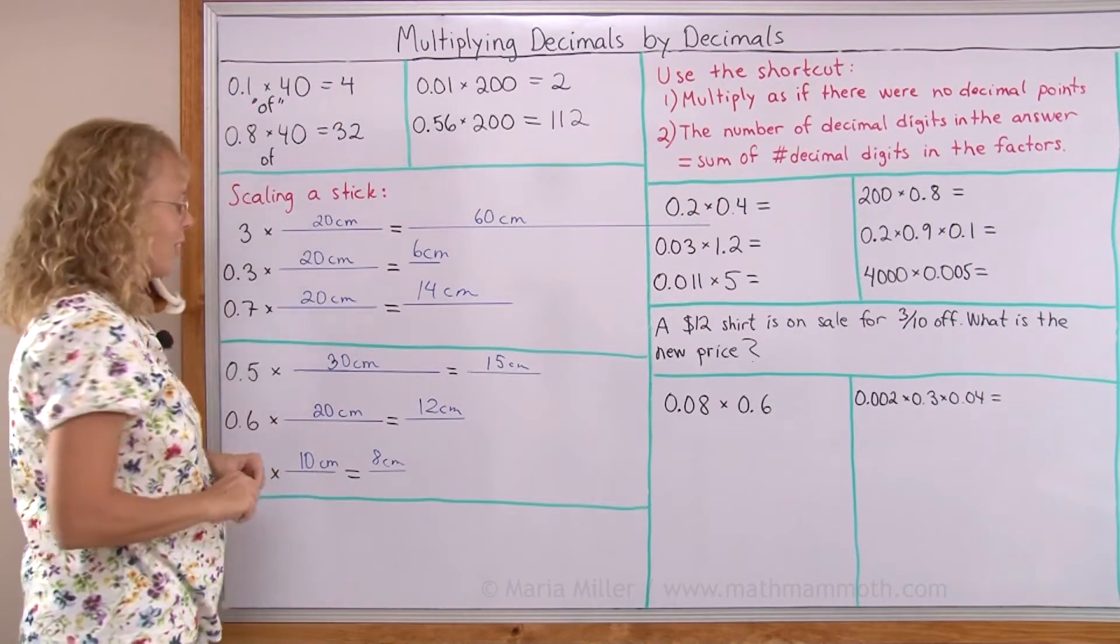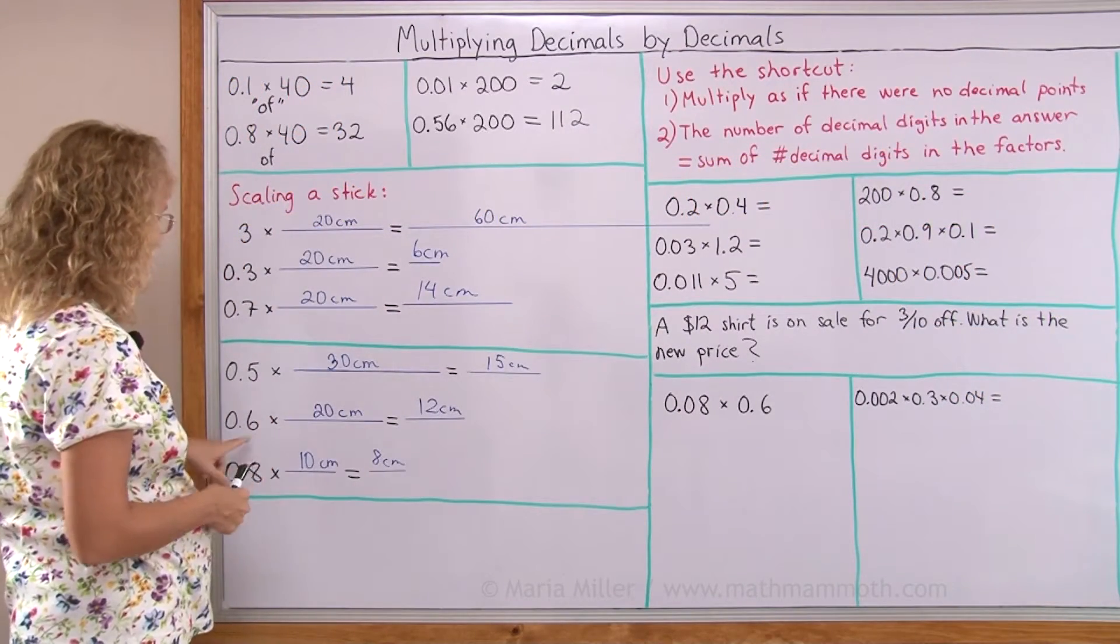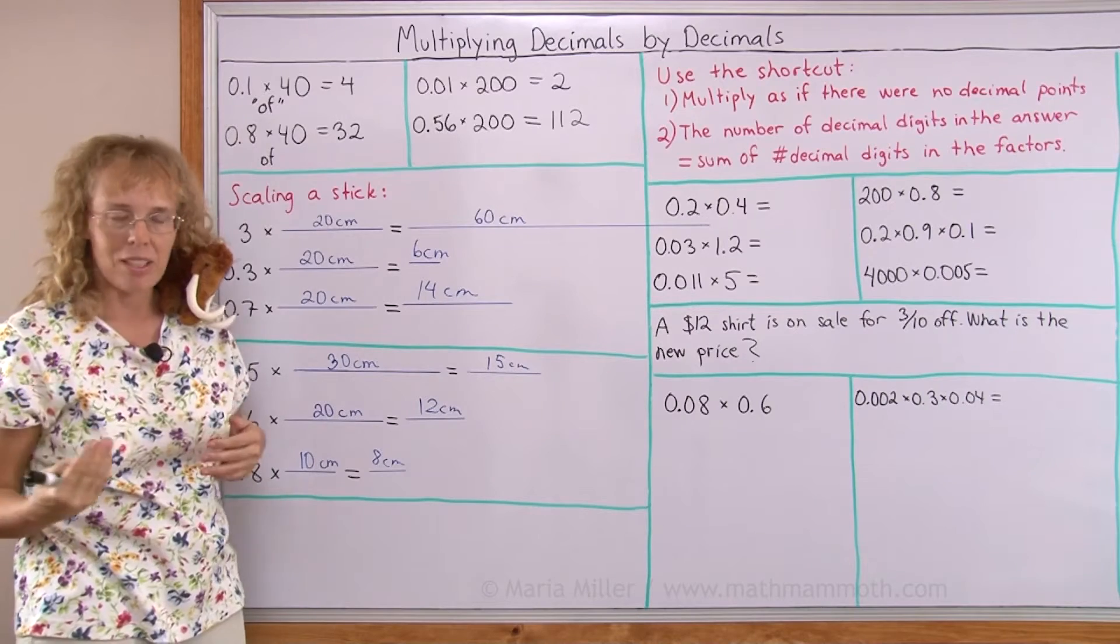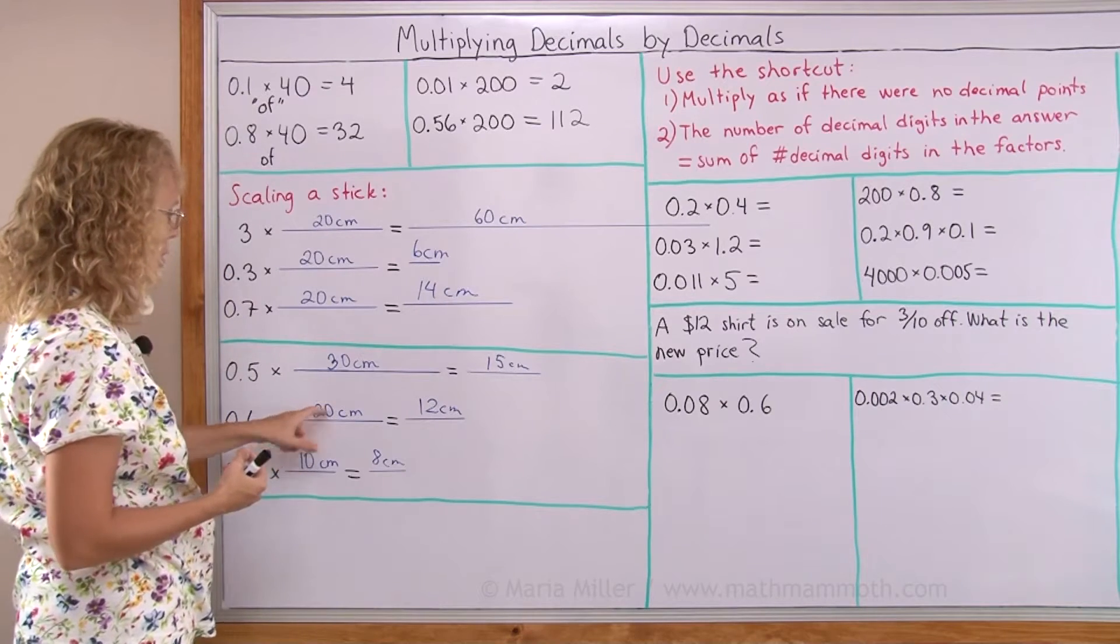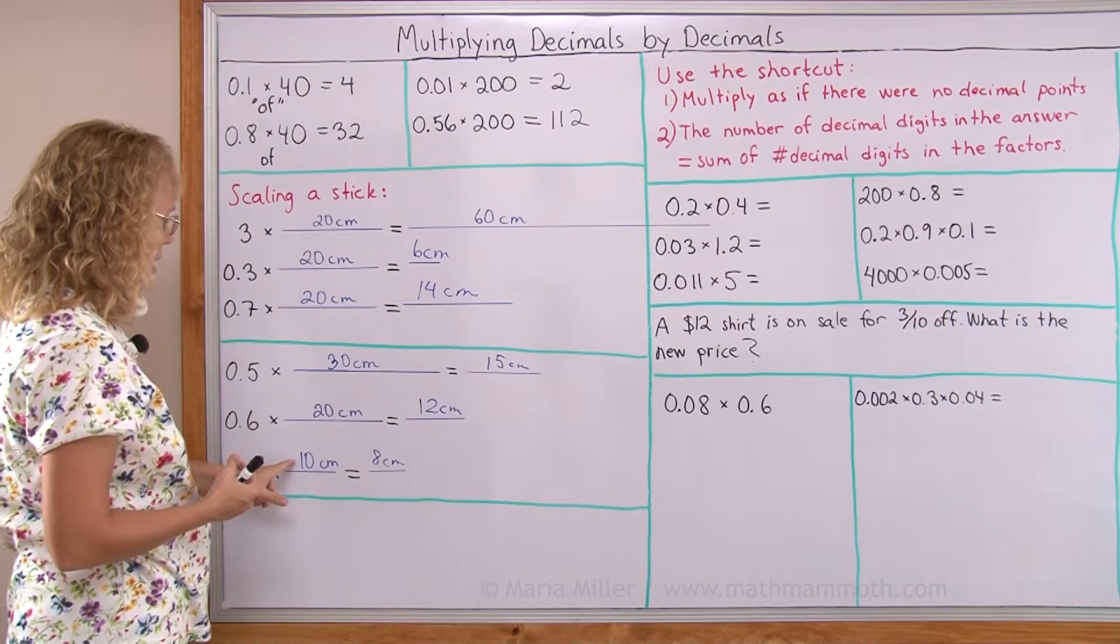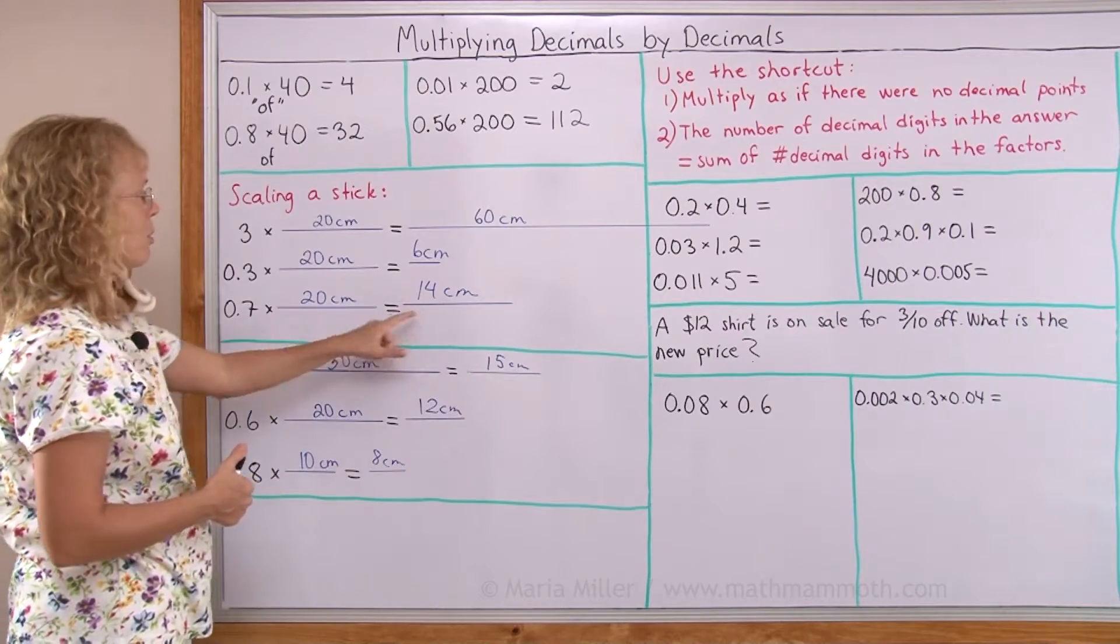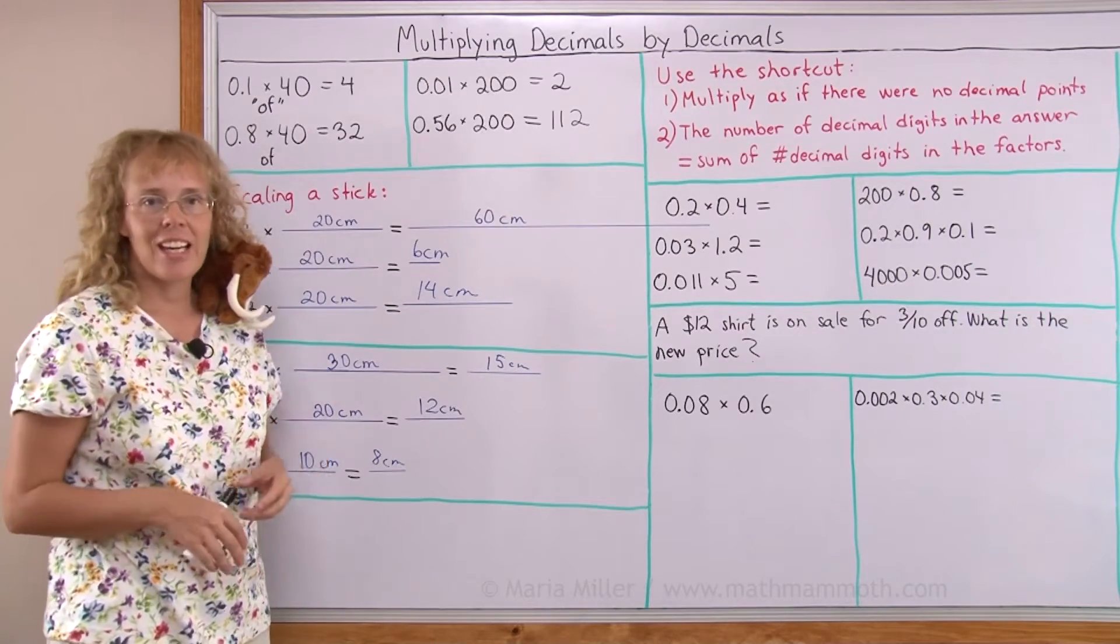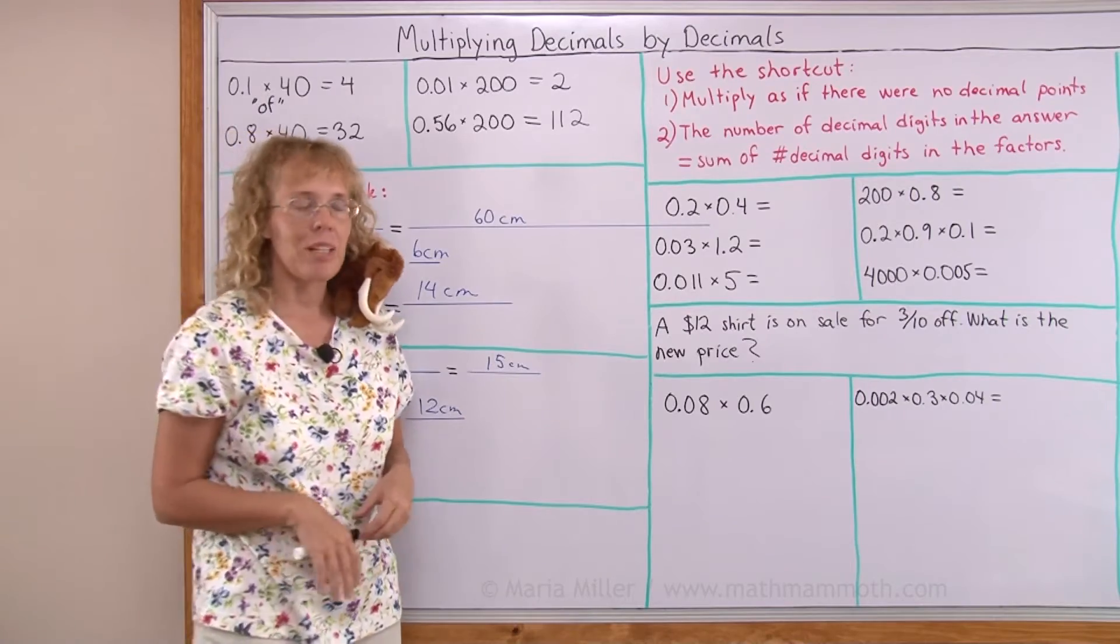Now you've probably noticed by now that we can actually just multiply in our heads using multiplication tables like 6 times 2, 12, 8 times 1, 8, or 7 times 2, 14, and so on. And that is indeed the case. Let me now show you the shortcut for decimal multiplication.